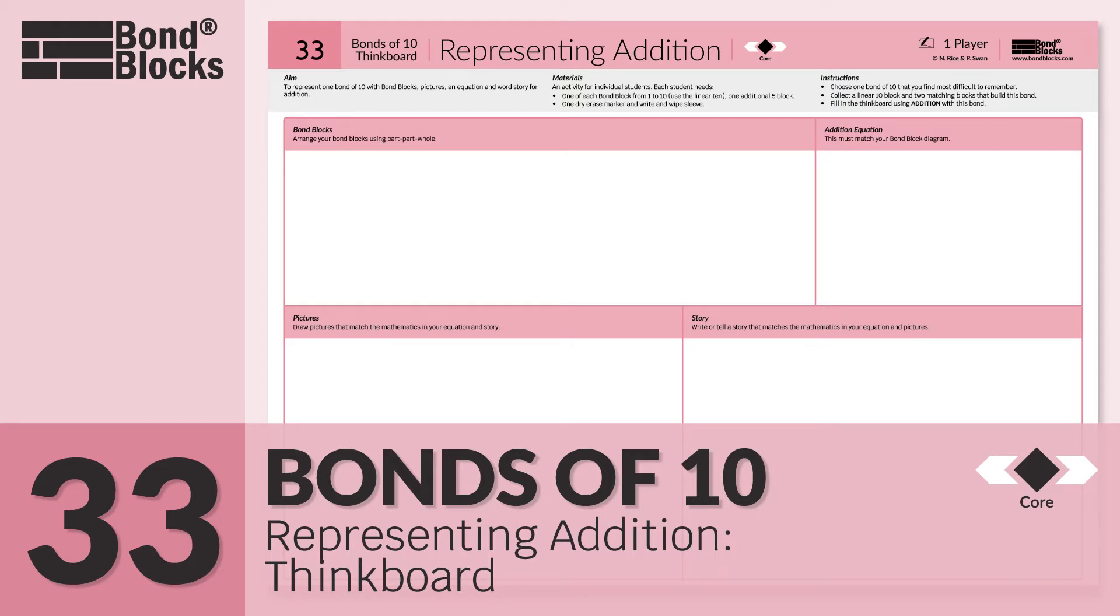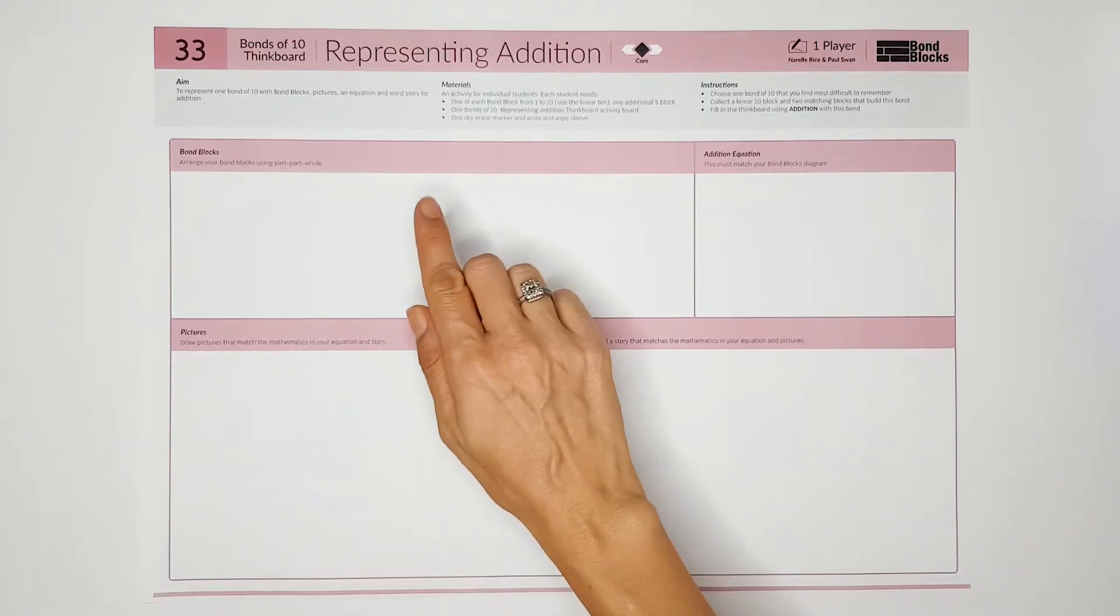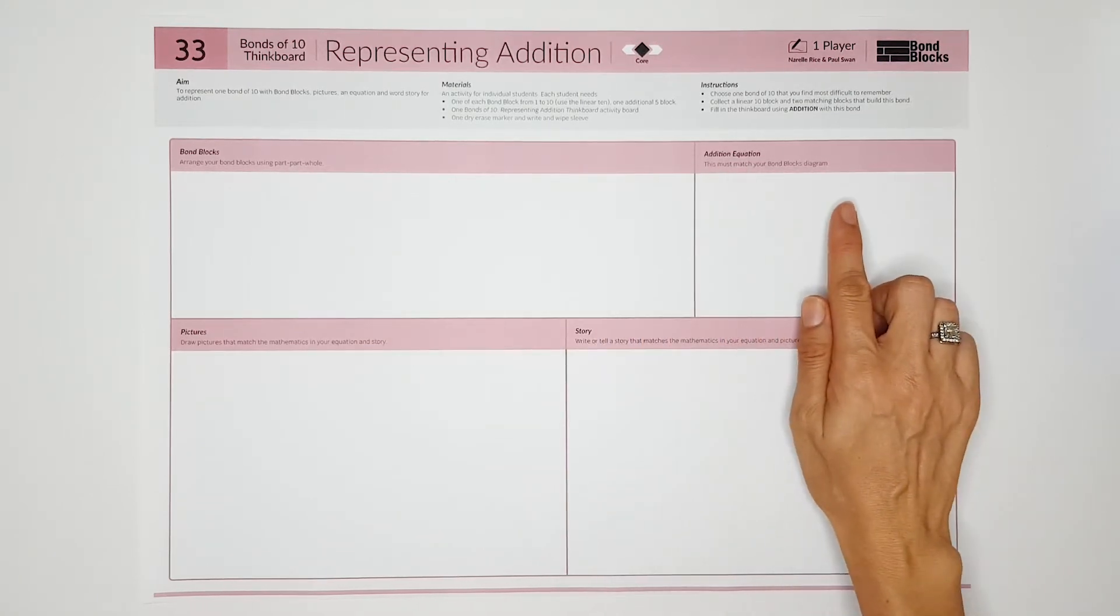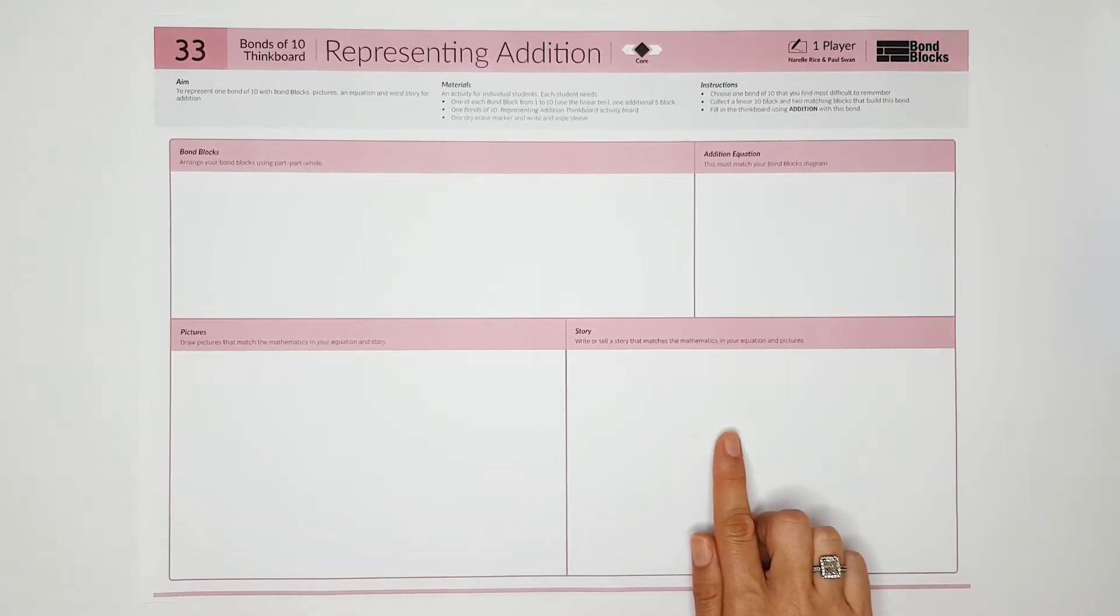Welcome to Activity 33, Representing Addition. In this activity, we will be representing one two-part bond of 10 using bond blocks in a part-part-whole diagram, numbers in an addition equation, drawn pictures, and words in a story.